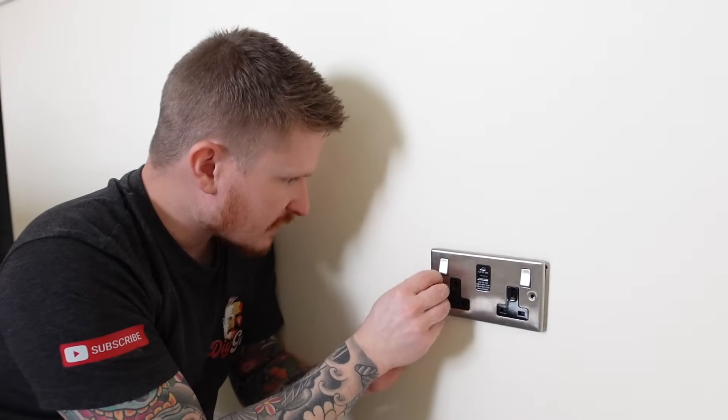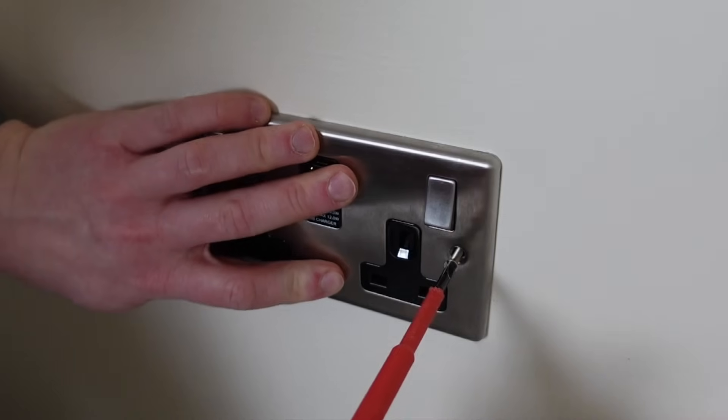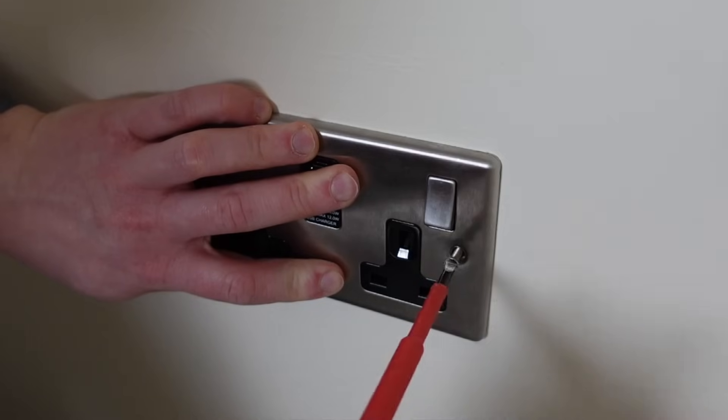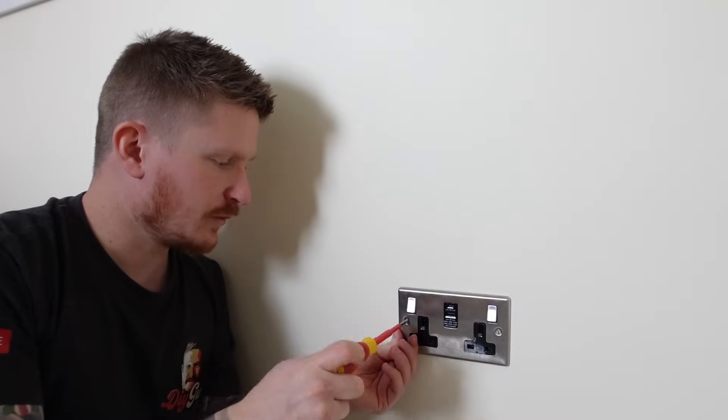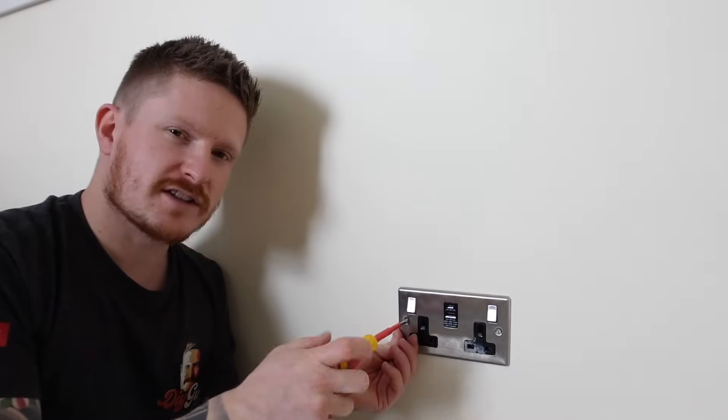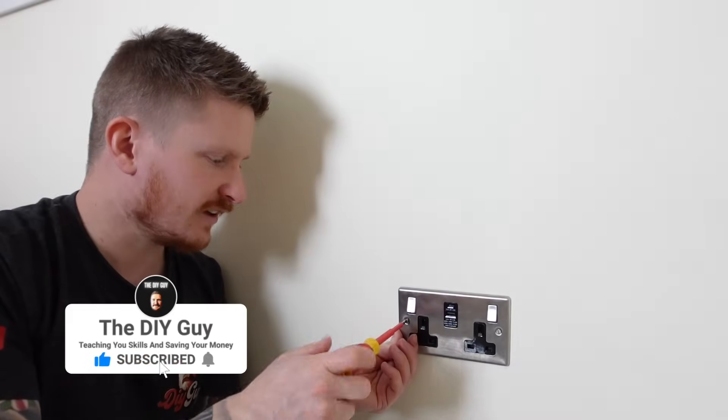Grab the two little screws that were supplied, just have a little look and you'll just be able to see where the lugs are. You can just get them screws started by hand, push the socket back to roughly where you want it and just do those screws up. But don't tighten them all the way up yet. We want to leave them so that the socket's a little bit loose, just a little bit, because we want to level the socket.